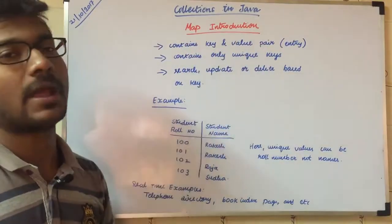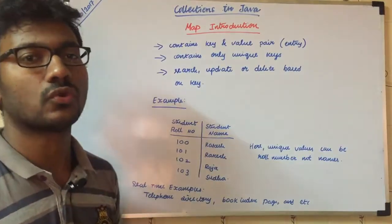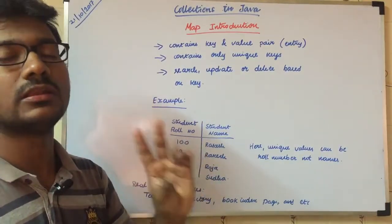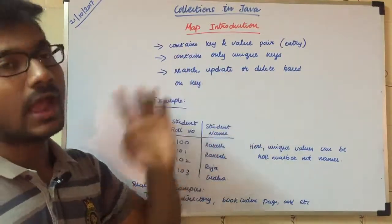Map properties: it contains key and value pairs. In other collections we can store values as sets and values or lists and values. But in Map we have keys and values.